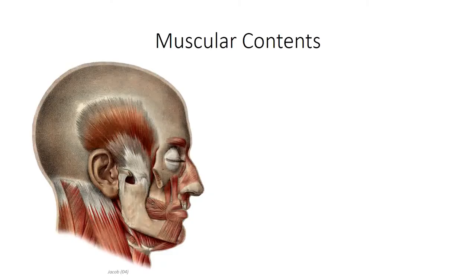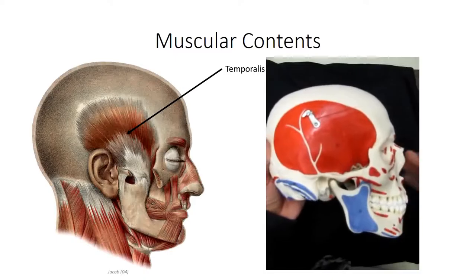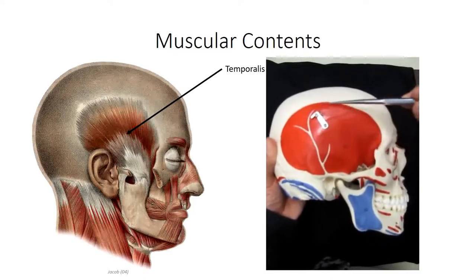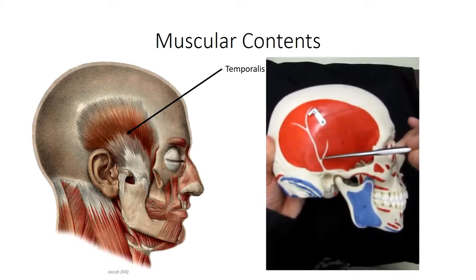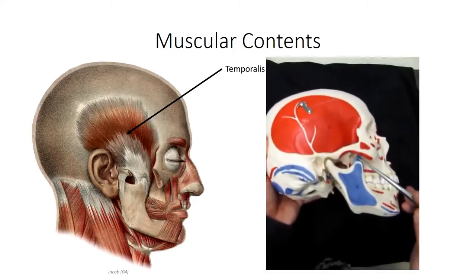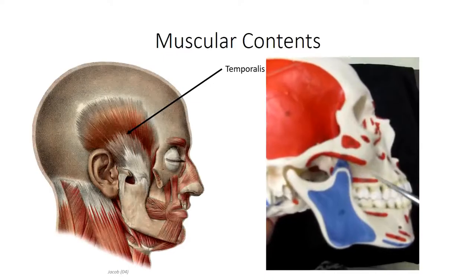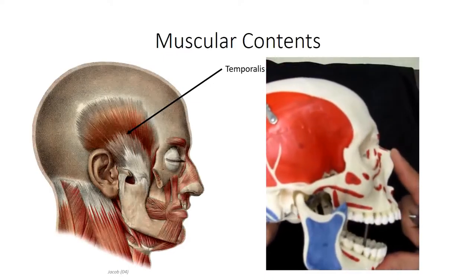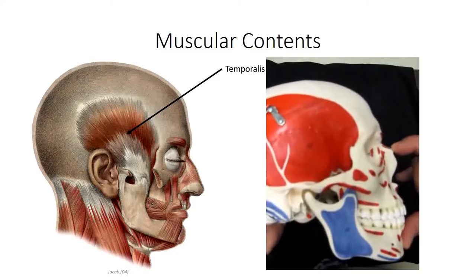Now let's look at some of the contents of the infratemporal fossa, starting with the muscles of mastication. Mastication is a fancy medical name for chewing, and in this case is used to describe four distinct muscles found in and around the infratemporal fossa, which are all innervated by the mandibular branch of the trigeminal nerve. The temporalis muscle is one you should already be familiar with. Its broad origin off the temporal bone is associated with the temporal region, but its tendon projects inferiorly into the infratemporal fossa to insert on the coronoid process of the mandible. When the fibers contract, the muscle pulls superiorly on the coronoid process, elevating the mandible to close the jaw.